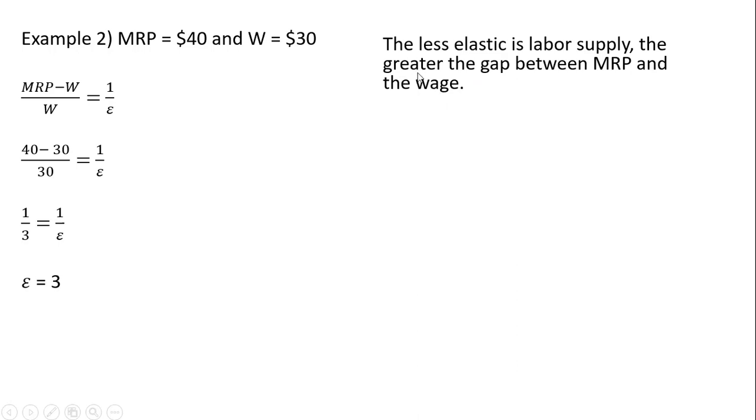So as we've seen in these examples, the less elastic is labor supply, the greater the gap between marginal revenue product and the wage. On the other hand, the more elastic is labor supply, like in our last example, the smaller the gap between marginal revenue product and the wage.